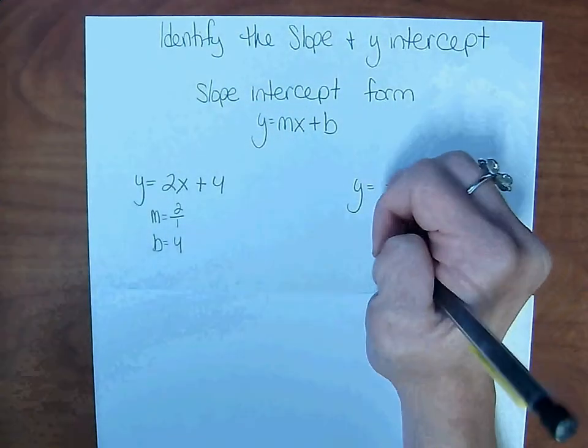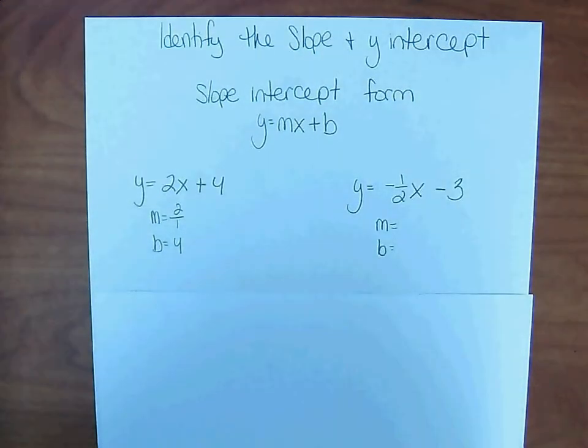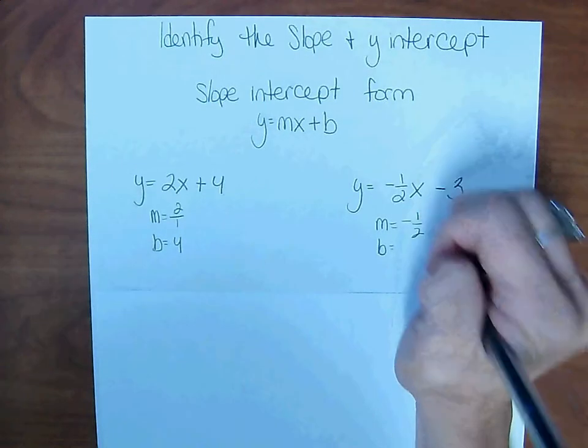For the next equation, y = -1/2x - 3. Slope: -1/2. Y-intercept: -3.